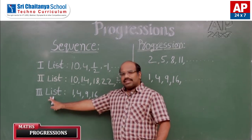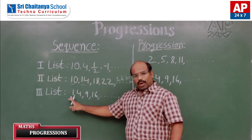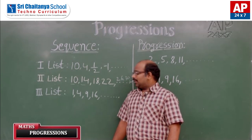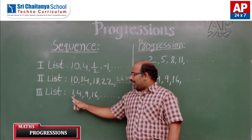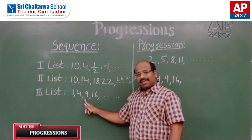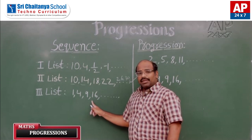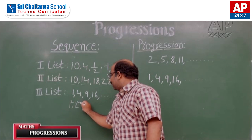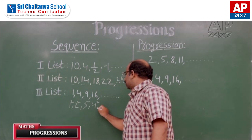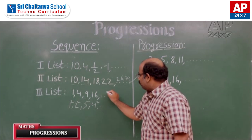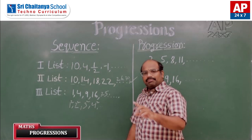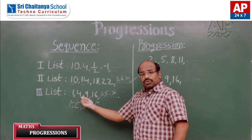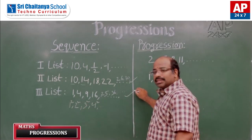Now let us discuss list 3. The numbers given are 1, 4, 9, 16, and so on. These can be represented as 1 squared, 2 squared, 3 squared, and 4 squared. So the next number is 5 squared, which is 25, then 6 squared which is 36, and so on. These numbers also follow a certain pattern, so this list also represents a sequence.